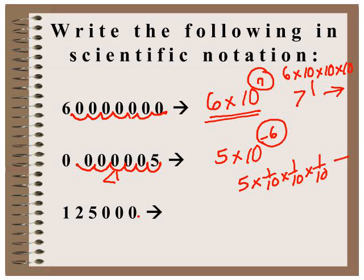This is a number greater than one, so even without thinking I know my power of ten is going to be positive. I move the decimal one, two, three, four, five places. So the power of five and the number becomes 1.25 times 10 to the fifth power.